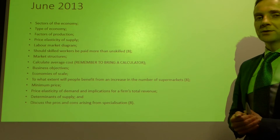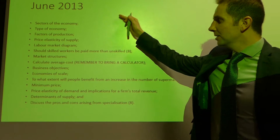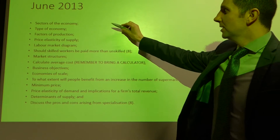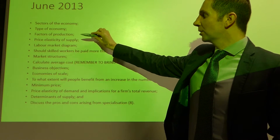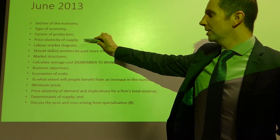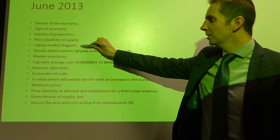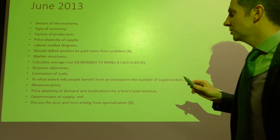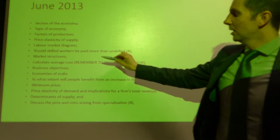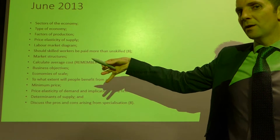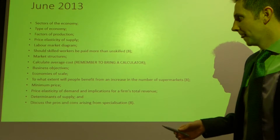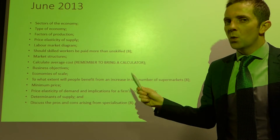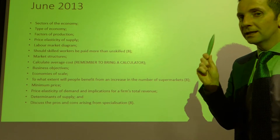June 2013 — these are the areas which were assessed if you look at the exam paper. Sectors of the economy, the type of economy, factors of production, price elasticity of supply. We had a labour market diagram, an eight-mark question asking whether skilled workers should be paid more than unskilled, a little question on market structures — meaning competitive markets — and calculate average cost. Remember, bring a calculator to the exam.